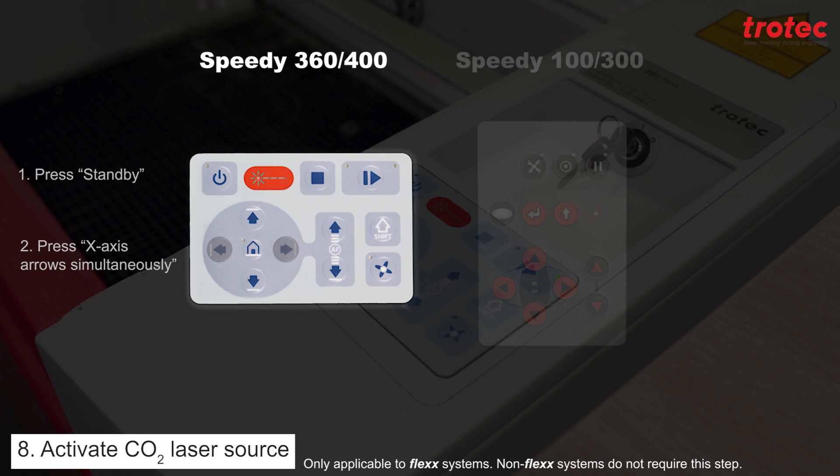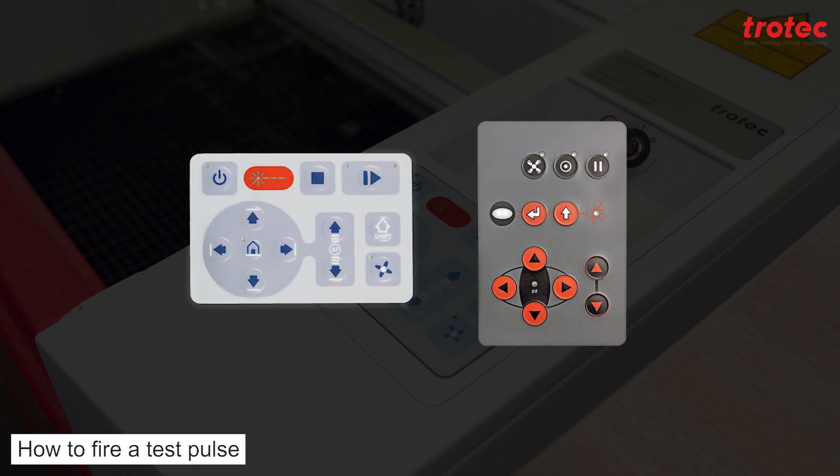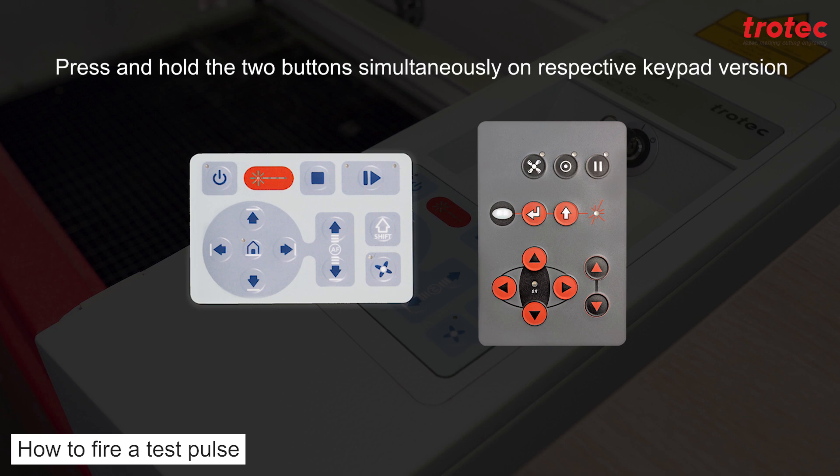For the speedy 360 or 400 press the standby button here. Then press the x-axis arrows simultaneously. For the speedy 100 or 300 press the standby button here. Then press the x-axis arrows simultaneously.